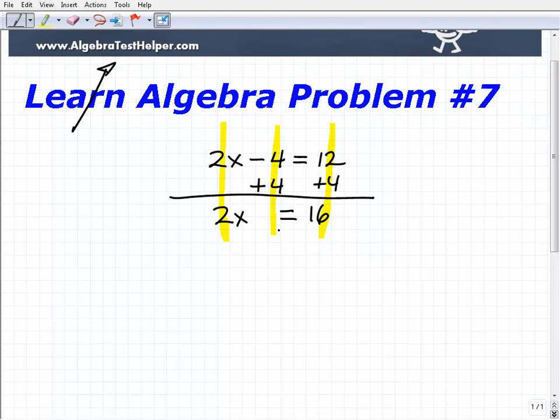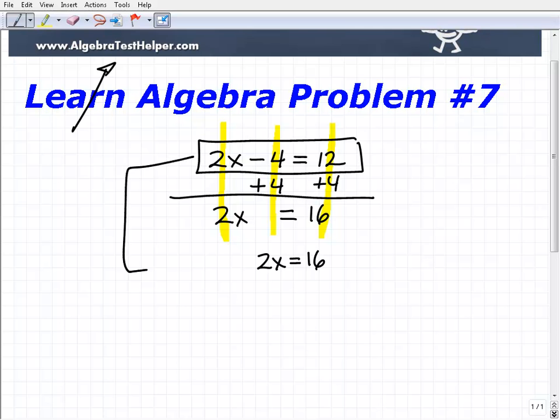So now what we've done is take this equation to this point: 2x equals 16. This equation here is actually equivalent to the original equation, but obviously this equation is simpler and easier to solve.